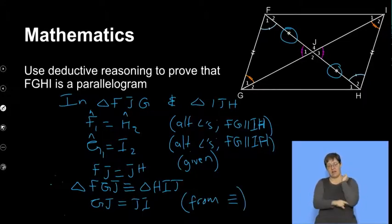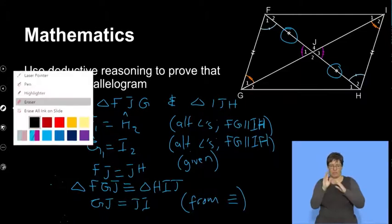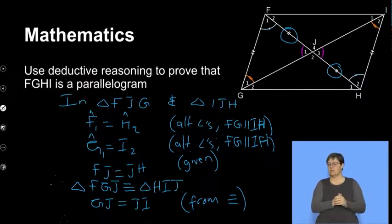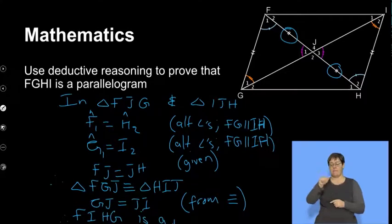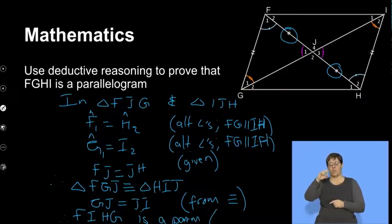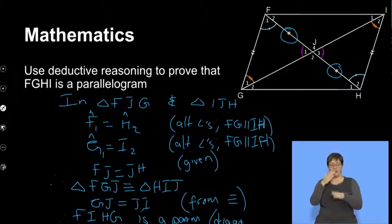Therefore, quadrilateral FIHG is a parallelogram — 'palm' is short for parallelogram by the way — and the reason is that the diagonals bisect each other. That's how congruency is used to our advantage in this method.